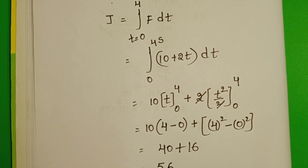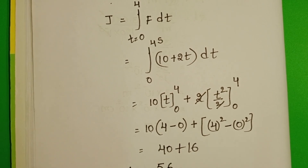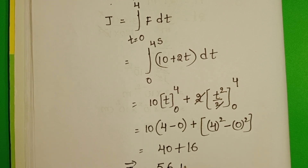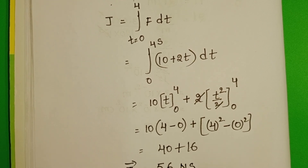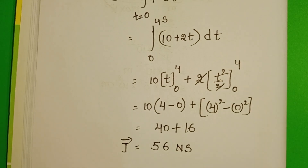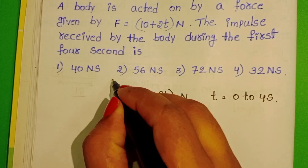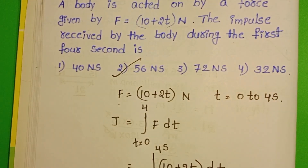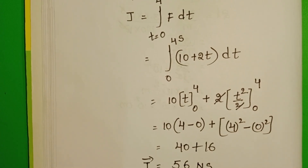The impulse received by the body is 56 newton seconds. The second option is correct.